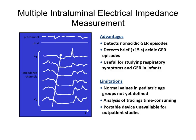Impedance testing can detect non-acidic reflux episodes, brief acidic reflux episodes, and is useful for studying respiratory symptoms and GER in infants. However, normal values in the pediatric age group are not well defined, analysis of the tracing is time-consuming, and the device is expensive for the patient to take home.